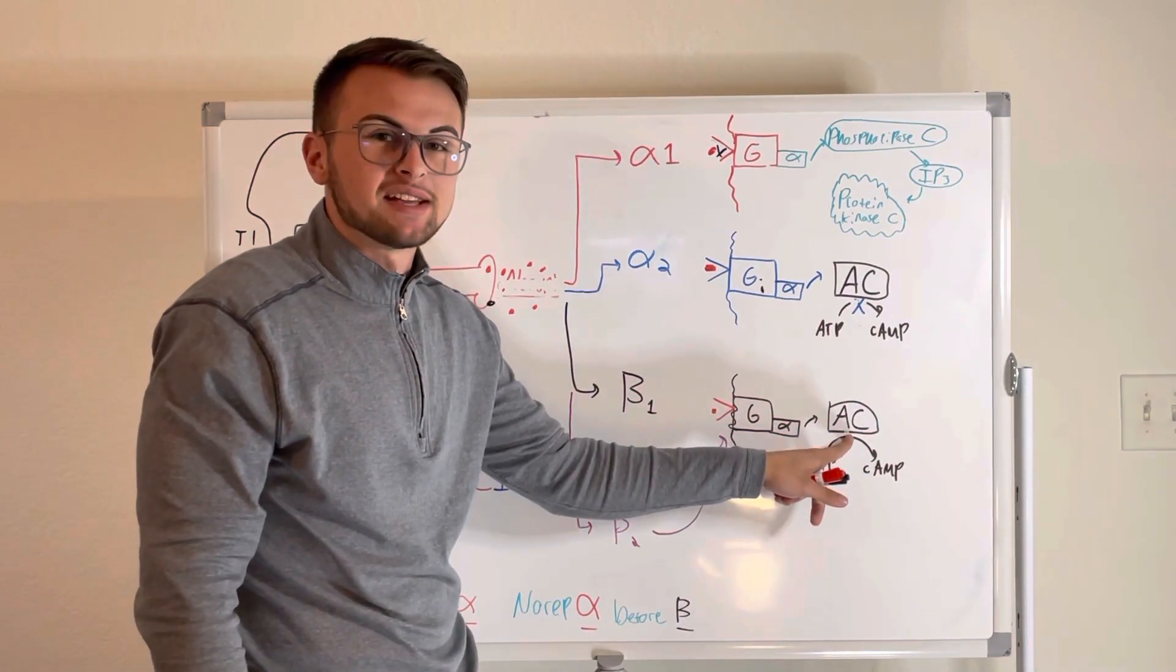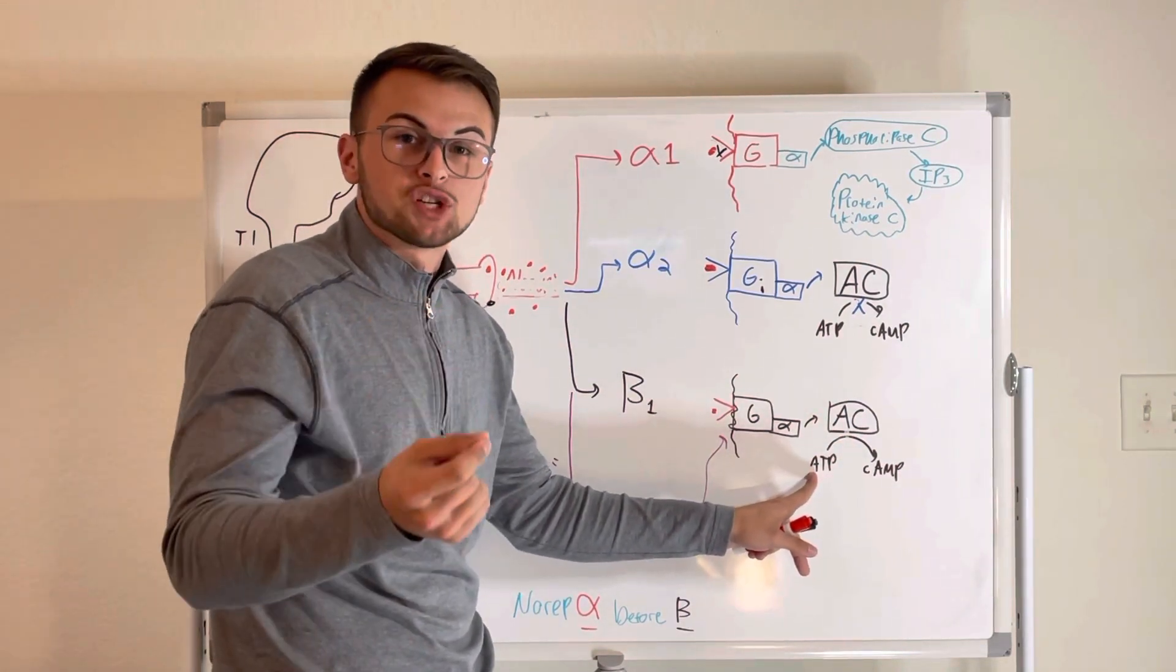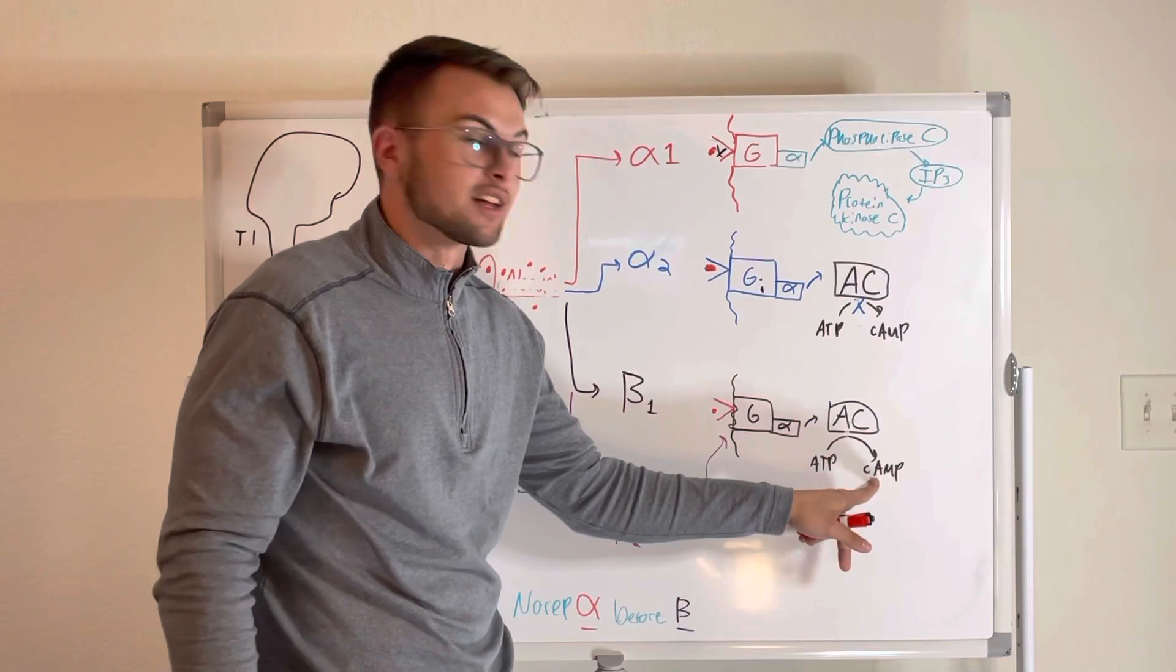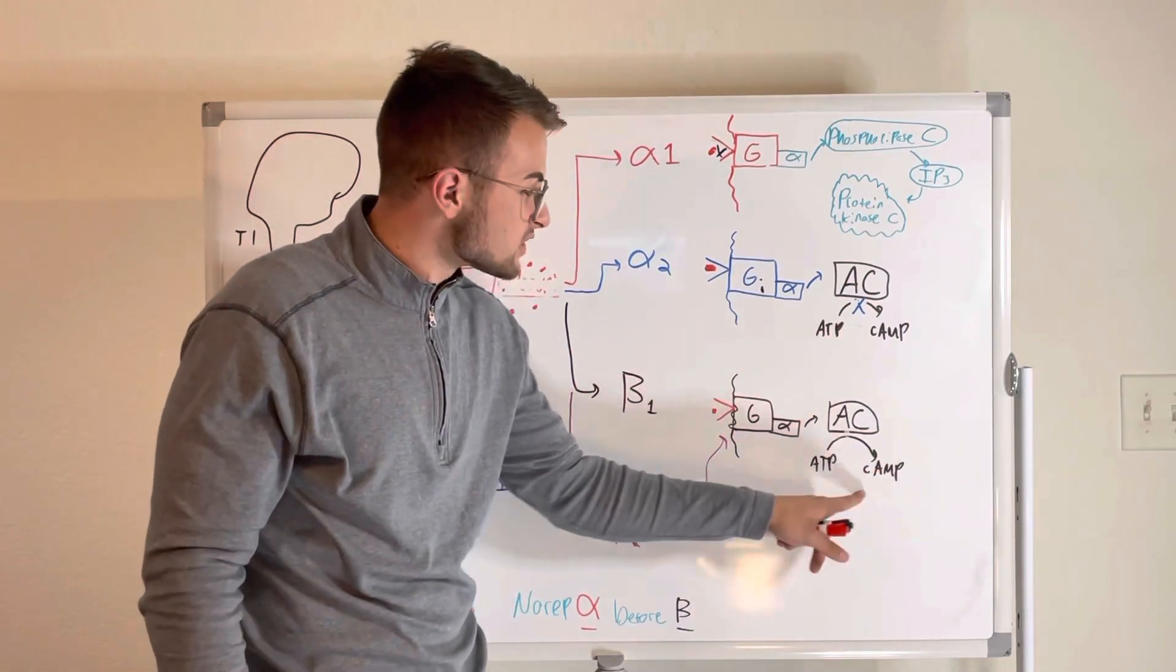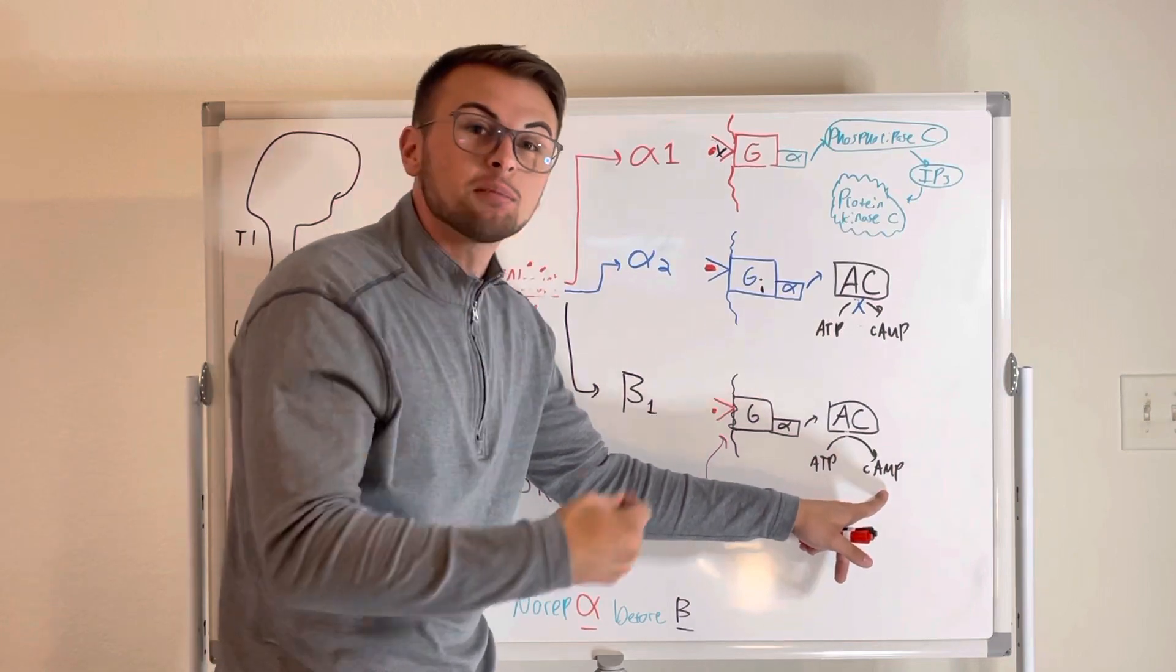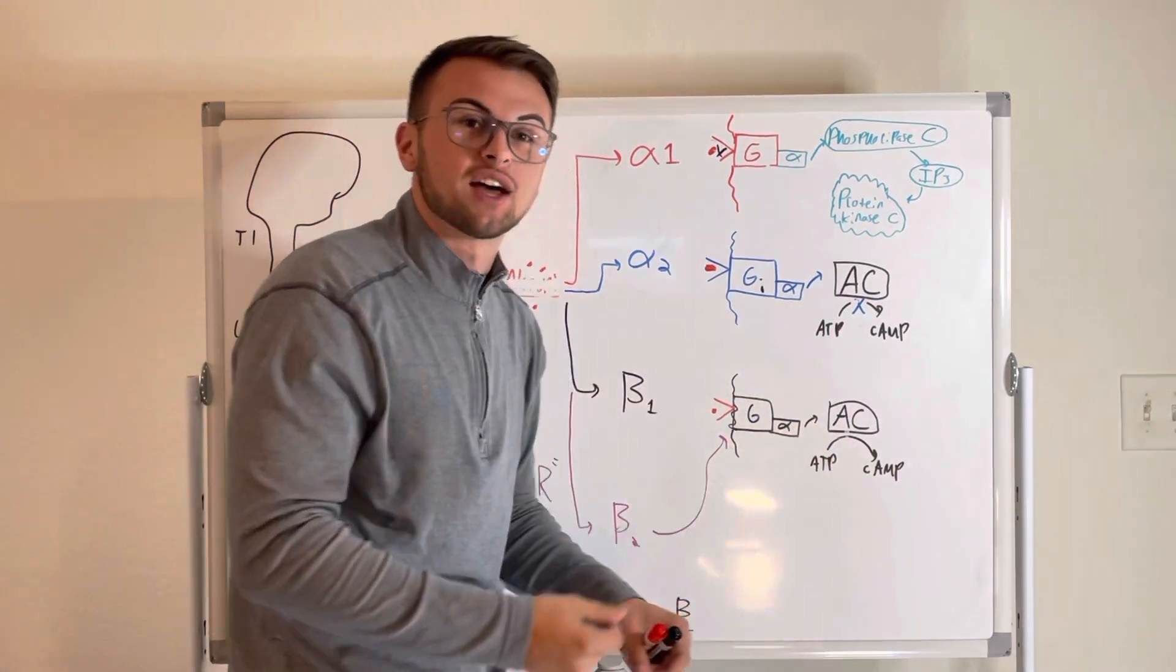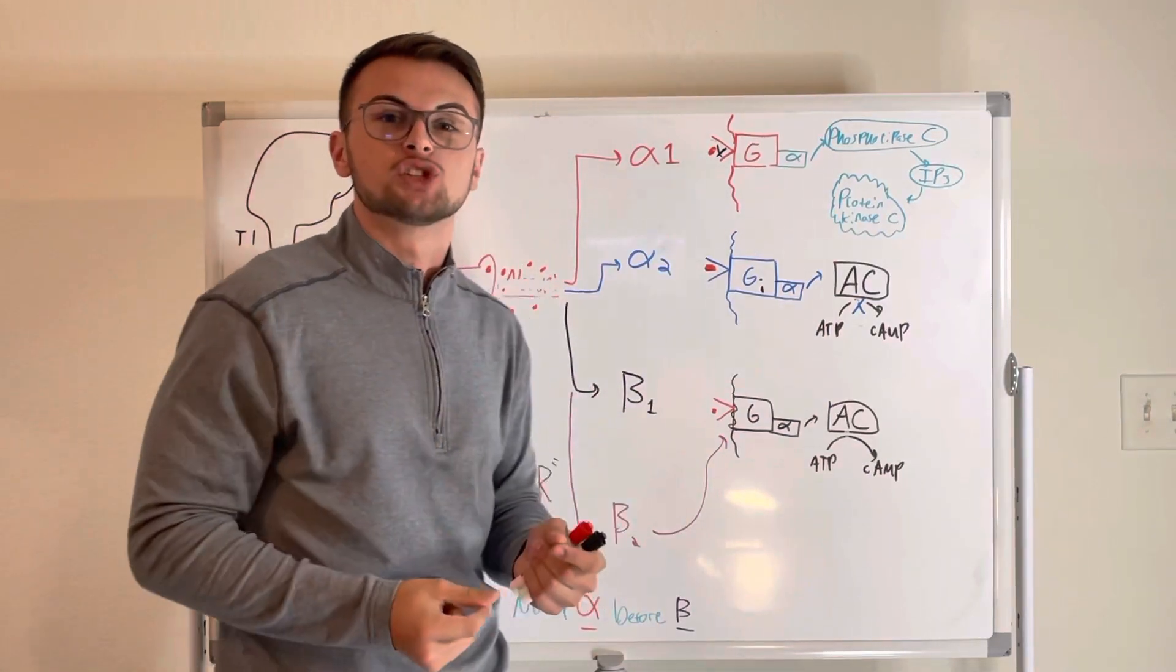The important job of AC is that it converts ATP, yes the popular energy molecule, into cyclic AMP. This is our second messenger. This is our shouter. This is an amplifier which will actually result in the action of the cell. In our case, beta-1 speeds up.